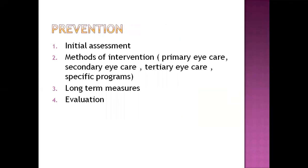Prevention of blindness can be divided into four phases: initial assessment, intervention, long-term measures, and evaluation. Initial assessment is used to find out the cause and any family history of blindness. In intervention, management is provided from the primary level through secondary to tertiary level. In long-term measures, we try to prevent every complication related to blindness. In evaluation, we measure the effectiveness of every intervention provided.